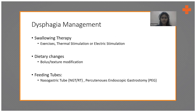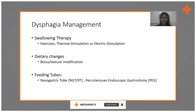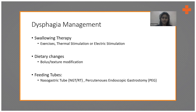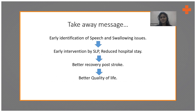Dysphagia management comprises swallowing therapy — including exercises, thermal stimulation, or electrical stimulation. Recent technologies provide electrical stimulation for laryngeal elevation and stimulating laryngeal muscles. Sometimes dietary changes such as bolus or texture modification are sufficient. For severe cases where oral intake is not possible for some time, an NG tube is inserted. If long-term non-oral feeding is expected, such as in global aphasia, a PEG tube is considered.